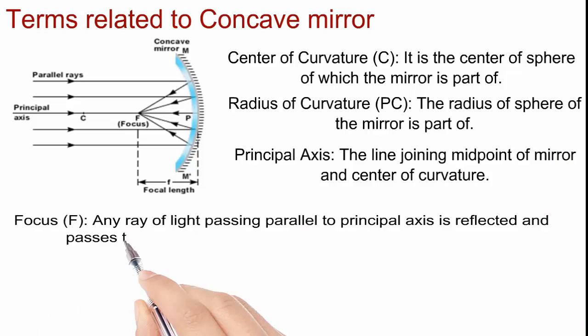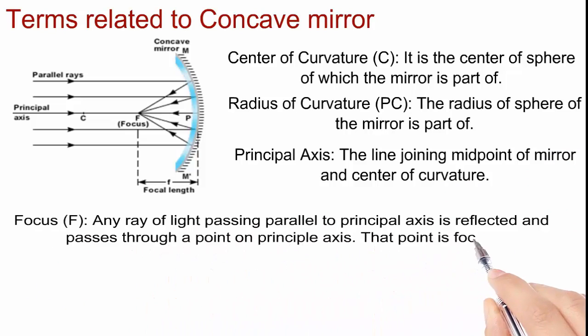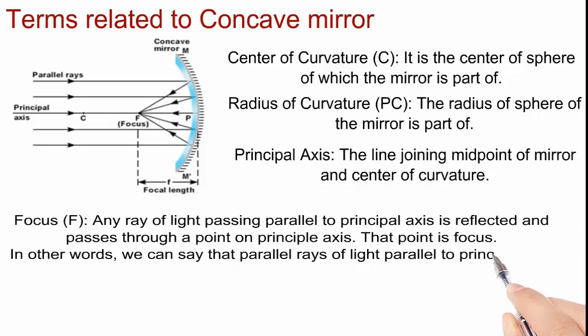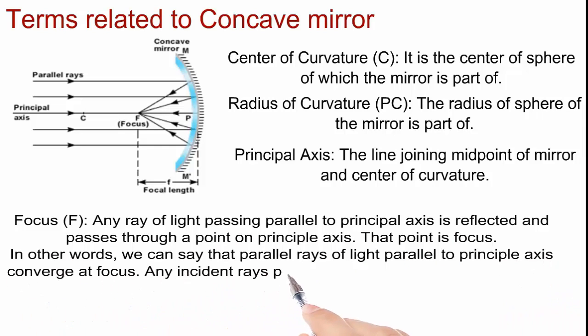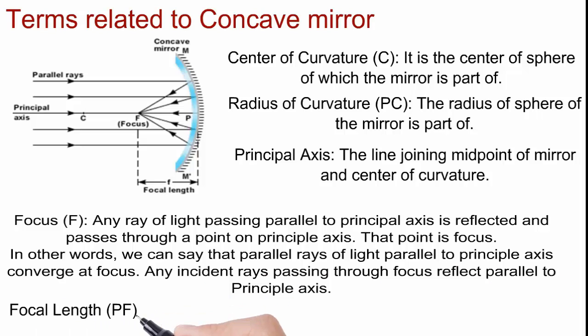Focus: any ray of light passing parallel to principal axis is reflected and passes through a point on principal axis. This point is focus. In other words, we can say that parallel rays of light parallel to principal axis converges at focus.